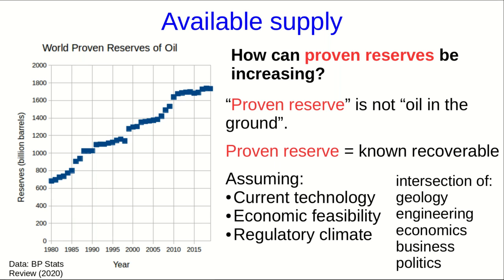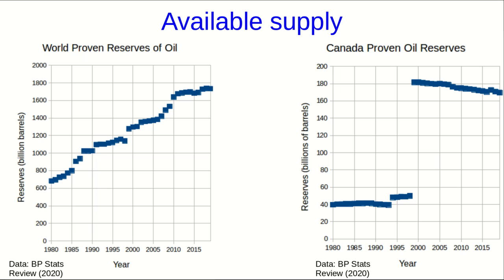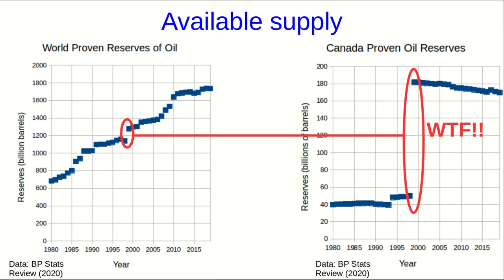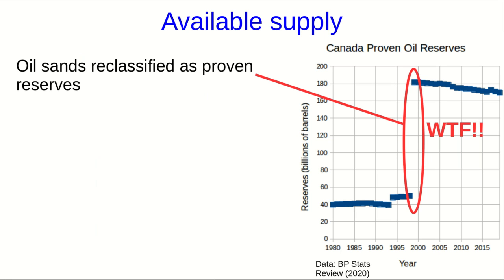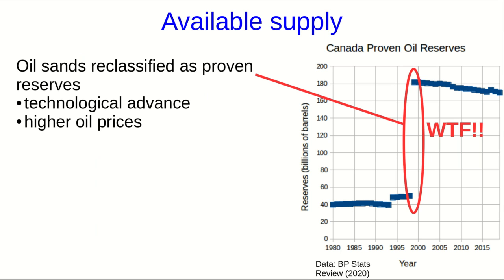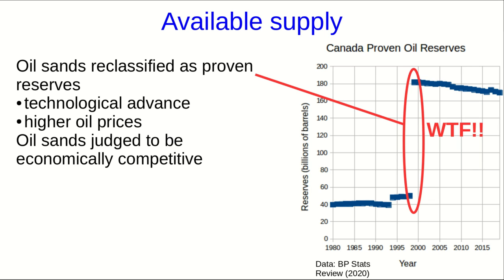This point is well illustrated by looking at this graph of the proven oil reserves just for Canada over the last 40 years. Notice this enormous jump in 1998, where the proven reserves more than tripled. Was there some previously unknown supply of oil in Canada discovered in 1998? You can even see this jump on the global supply. No — this was not a new supply that was discovered. This was the reclassification of the oil sands as part of the proven reserves because of technological advances and higher oil prices, and so it was judged that the oil sands could now be economically competitive.